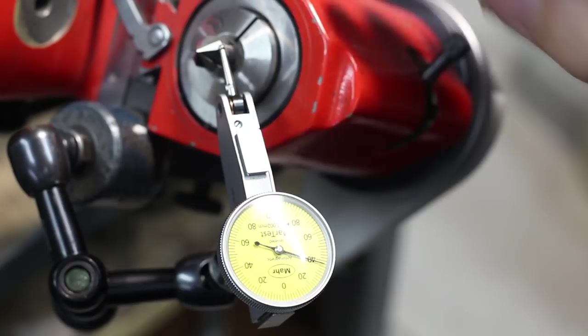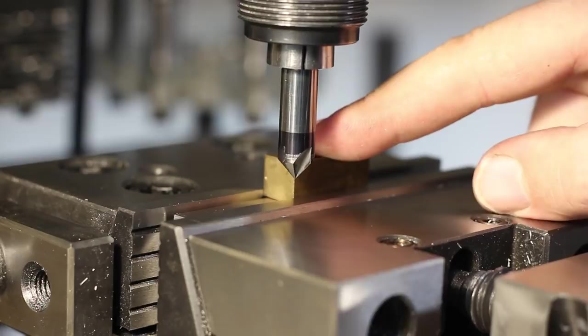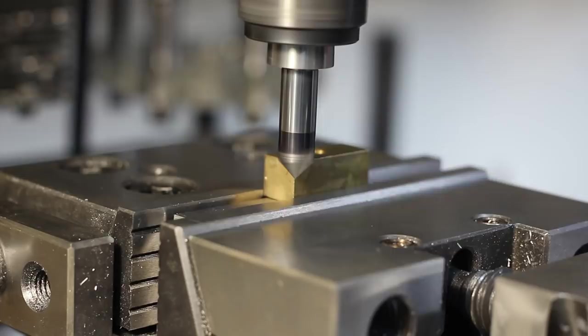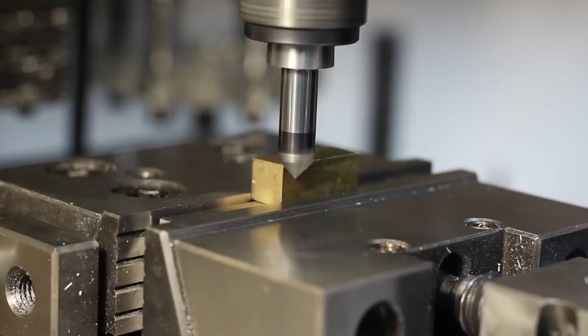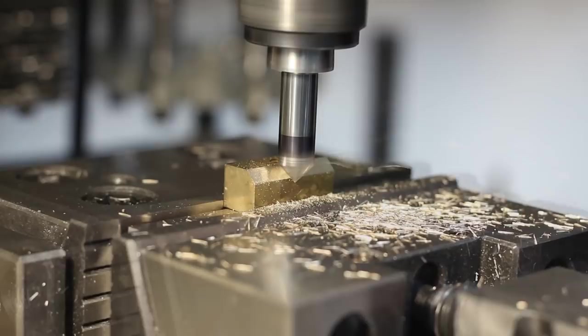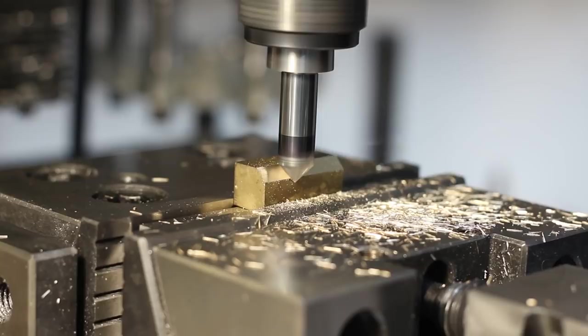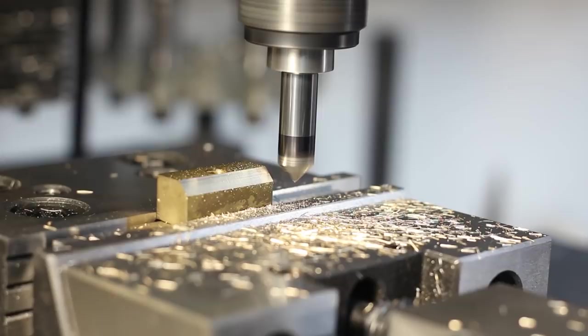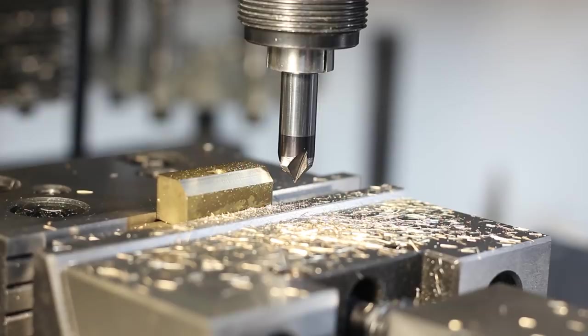Let's go to the mill and do a test cut with this thing. Okay, there we go. We're cutting brass at 3000 RPM.